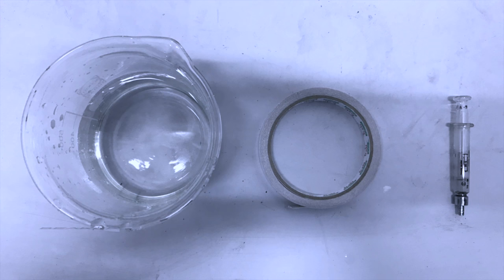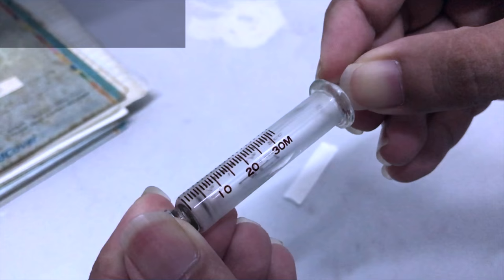Hi guys, we're going to show you an experiment to demonstrate the first law of thermodynamics. The materials that you need for this experiment are beaker, double-sided tape, and syringe. First, increase the air volume inside of the syringe to 10 ml.